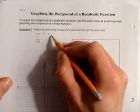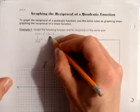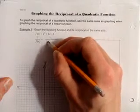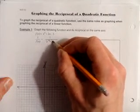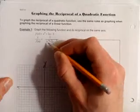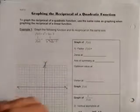Graph the following function and its reciprocal on the same axis: f(x) = x² + 2x - 3. We'll write that reciprocal function as 1 over x² + 2x - 3.